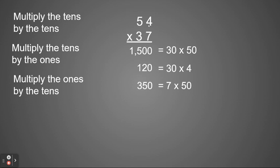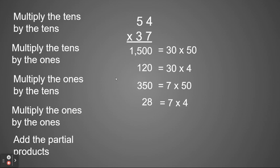And finally, multiplying my ones places together. Multiplying 7 times 4. 7 times 4 is 28. Now I see I have four partial products to go with my four digits. So I'm going to add those partial products together.